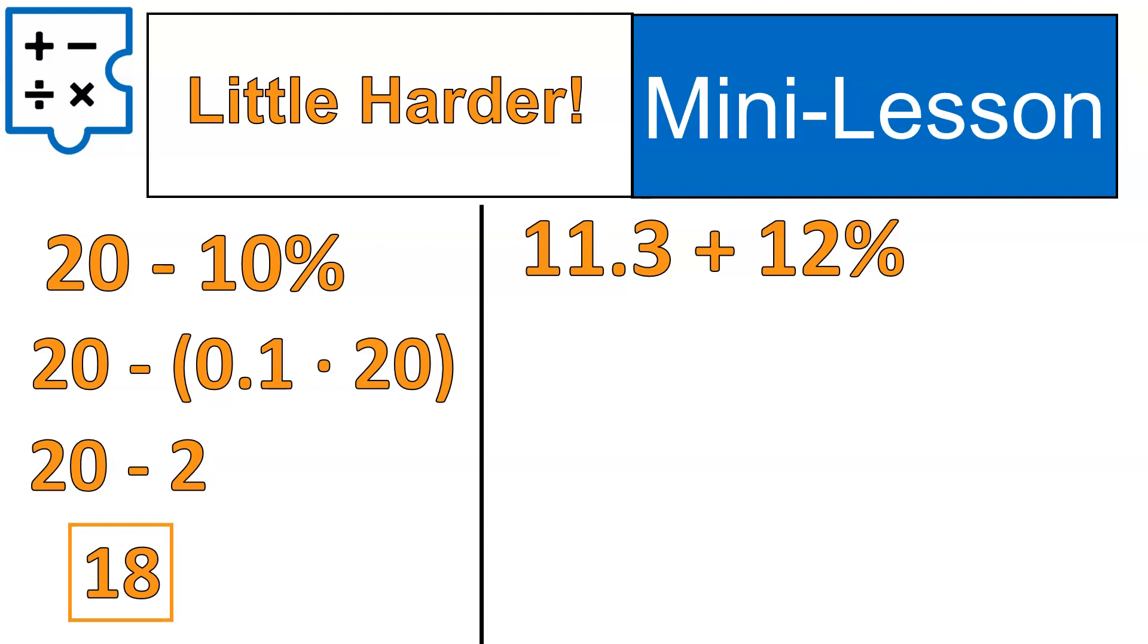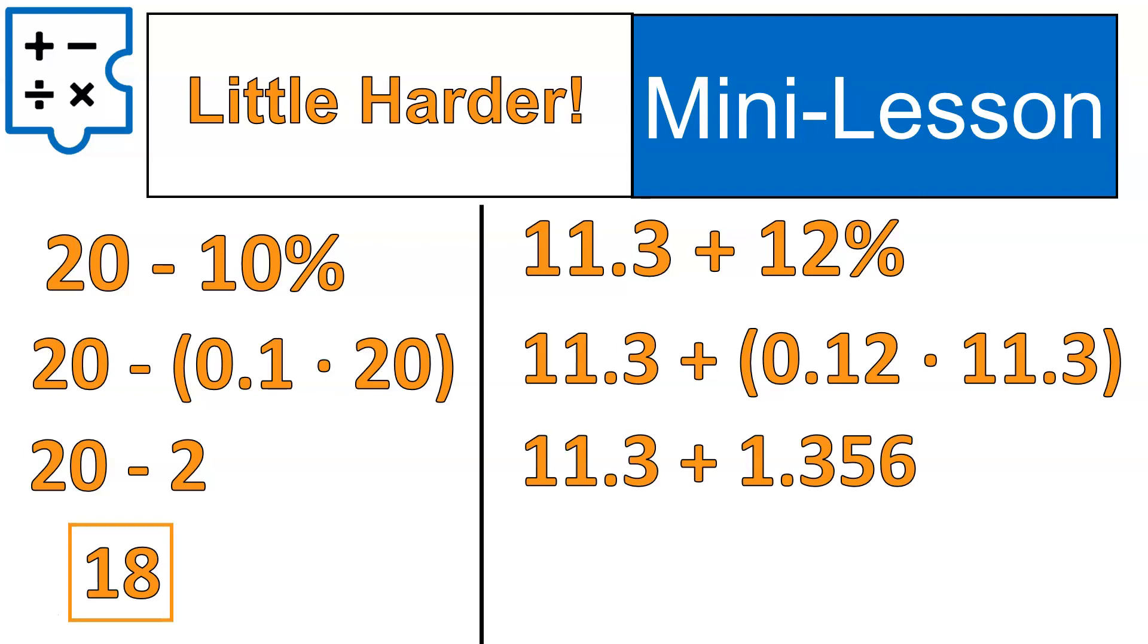Let's go over to this one where we have 11.3 plus 12%. Again, remember that's 12% of 11.3. So, it's going to look like this, a little bit more complicated of an expression. 11.3 plus 0.12 times 11.3, or 12% of 11.3. First, we calculate what's inside the parentheses, and we'll get 1.356. Then, we add those two together, and like I said, I am rounding up to two decimal places. This would technically be 12.656, but we're going to round it up to two decimal places for our final answer.